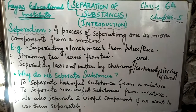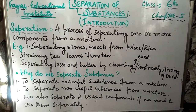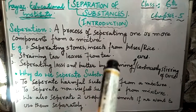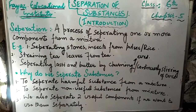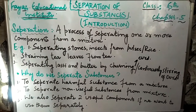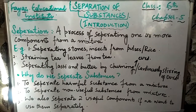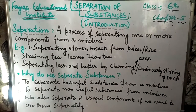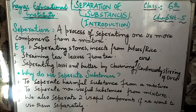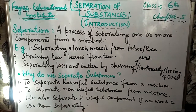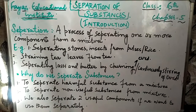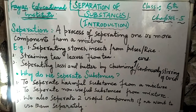Let's take some examples. The first example is separating stones and insects from pulses and rice. Students, you will see when your mother prepares pulses, she picks out the stones and insects from them.